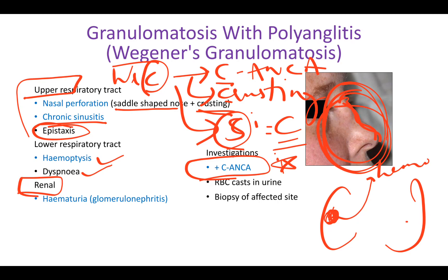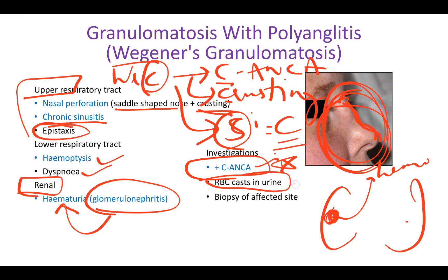The kidneys are almost always affected in vasculitis, leading to glomerulonephritis which presents as hematuria. On investigation, you'll see C-ANCA and RBC casts in urine — C for casts. On biopsy, you'll see necrotizing granulomatous granulomas, but there won't be any eosinophils.